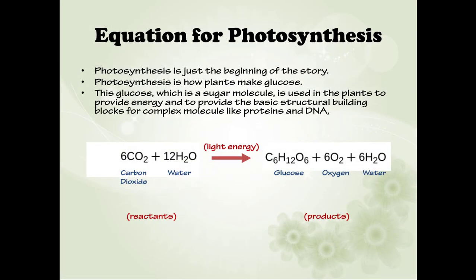Photosynthesis is how plants make glucose. This glucose, which is a sugar molecule, is used in the plant to provide energy and to provide basic structural building blocks for complex molecules such as protein and DNA. Here is the equation for photosynthesis: 6 carbon dioxide molecules plus 12 water molecules in the presence of light energy will produce 1 glucose molecule, 6 oxygen molecules, and 6 water molecules.